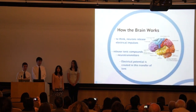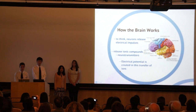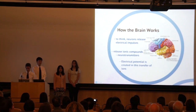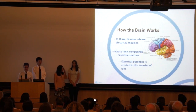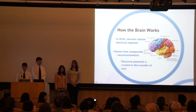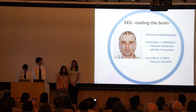In order to understand how we can read the brain, we first have to understand how the brain works. Basically, the brain is made up of billions and billions of neurons, and these neurons release electrical impulses. These involve compounds called neurotransmitters, and they form electrical potential, and this is the basis for how we can discern the brainwaves to read the brain.